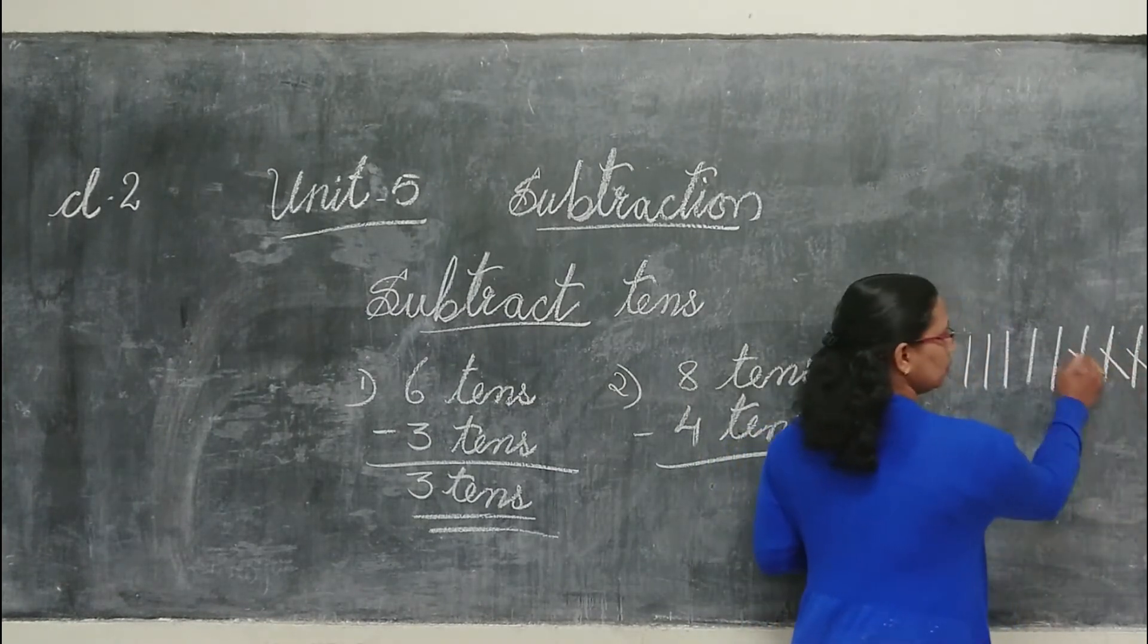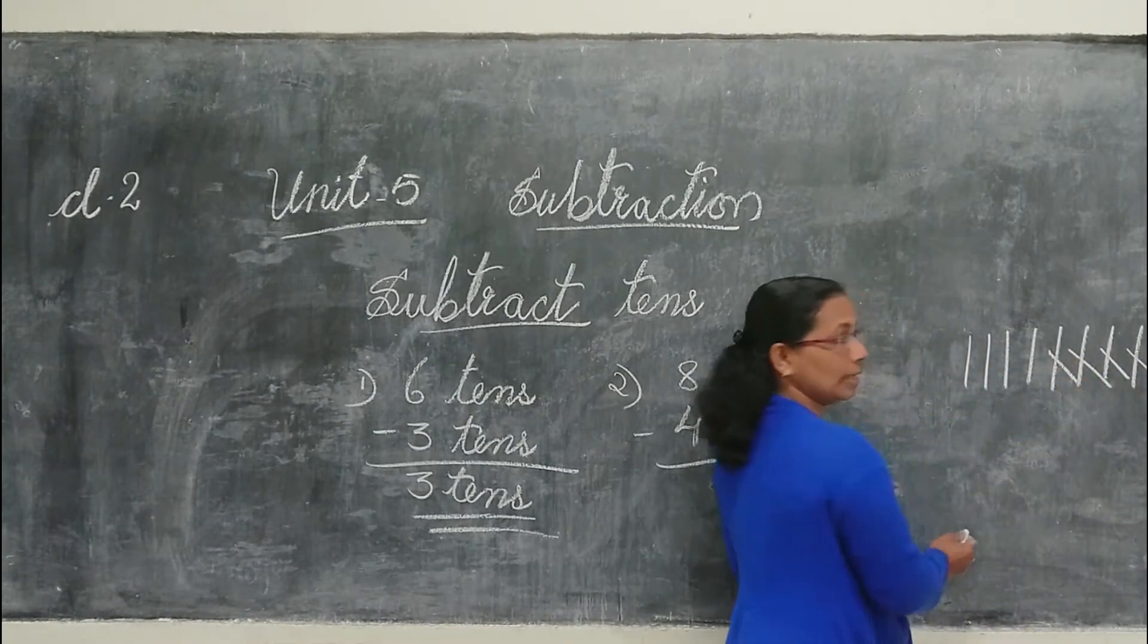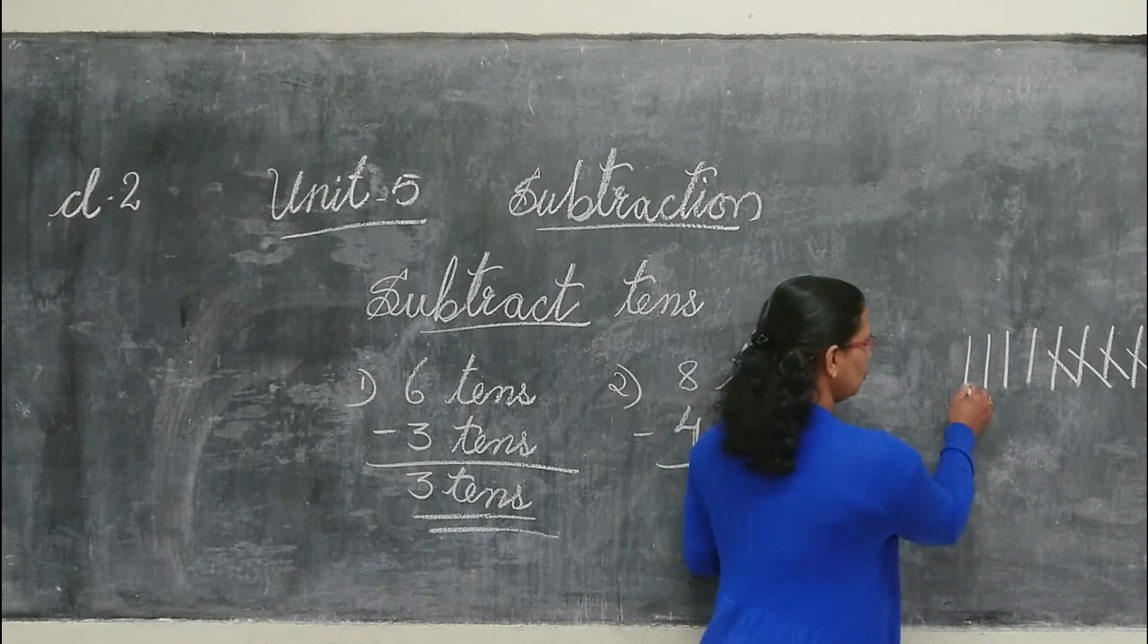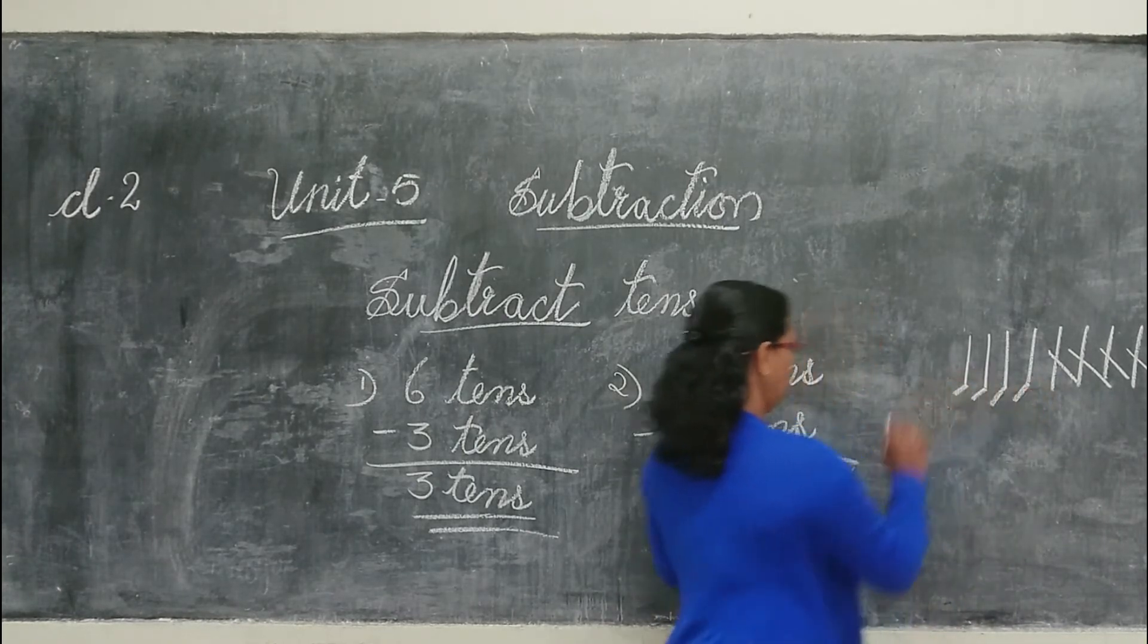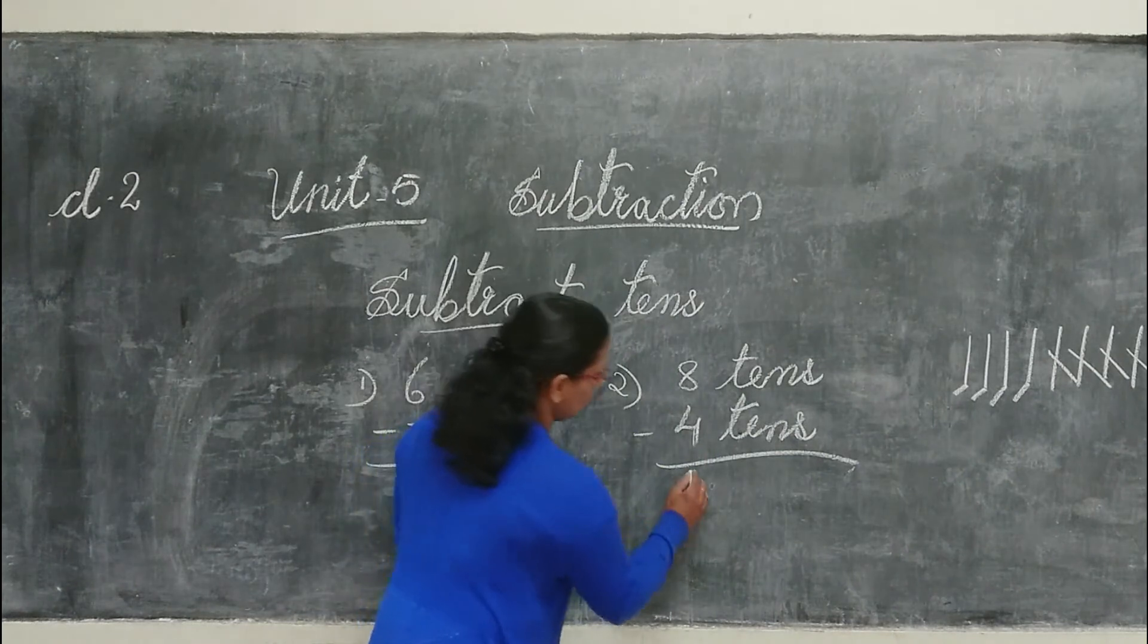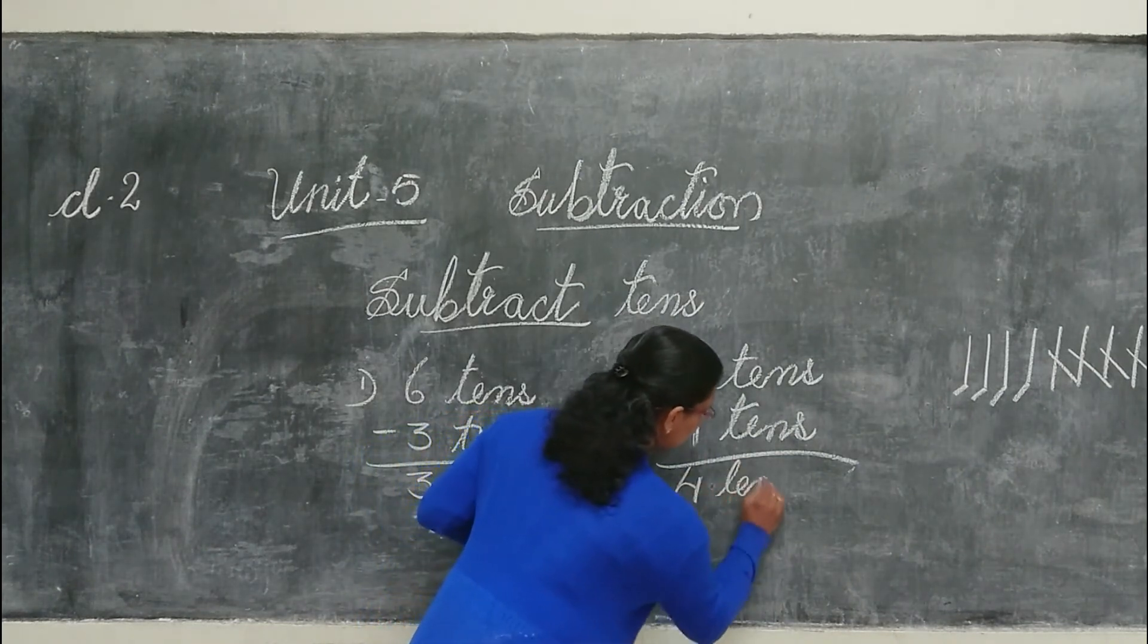1, 2, 3, 4. We can count: 1, 2, 3, 4. So we are getting here 4 tens.